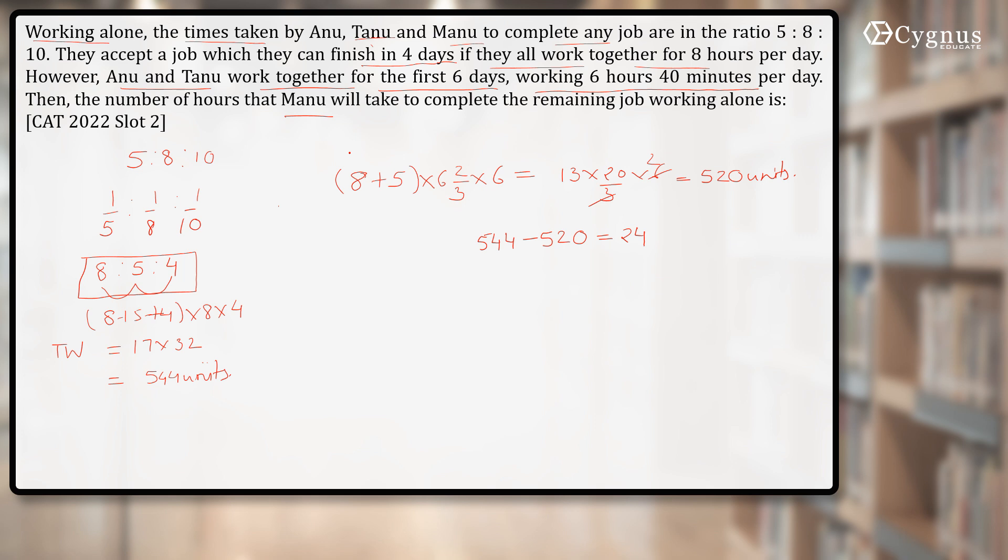The number of hours Manu will take to complete the remaining job working alone is: Manu's efficiency is 4 units per hour, and Manu needs to finish 24 units, so 24 divided by 4 gives you 6. So the total time required becomes 6 hours.